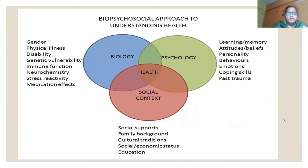There are five psychological approaches to understanding health. Health may be understood in biological, psychological, and social contexts. Psychological factors include learning, memory, attitudes, feelings, personality, behaviors, emotions, coping skills, and past trauma. Social context includes social support, family background, cultural relations, socioeconomic status, and education.